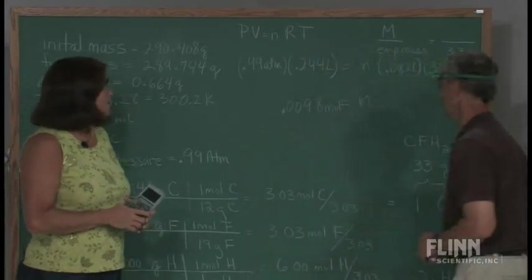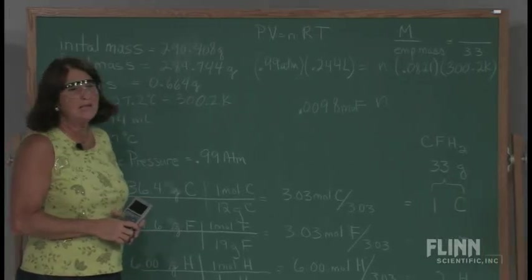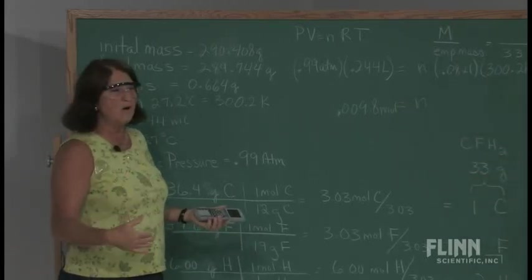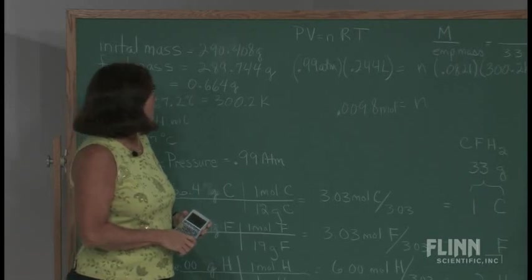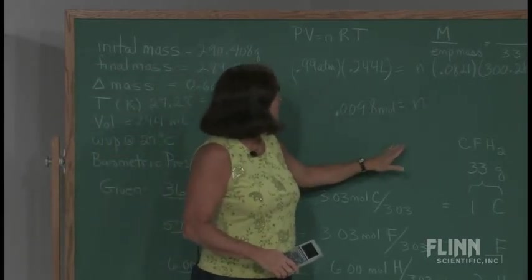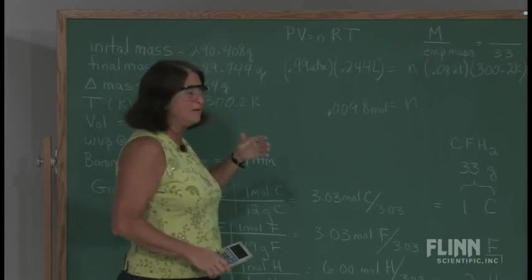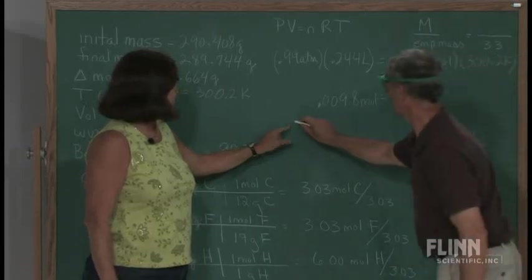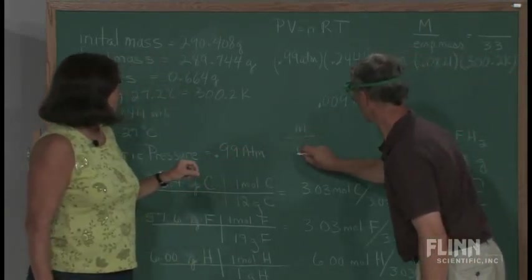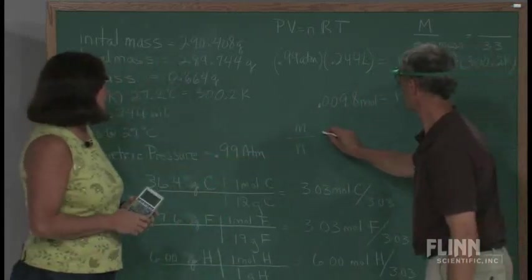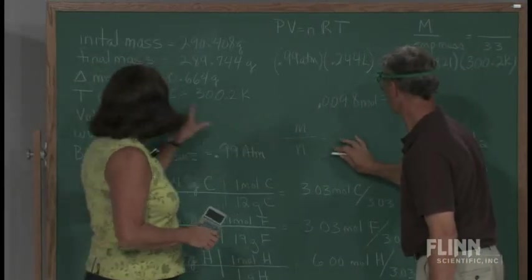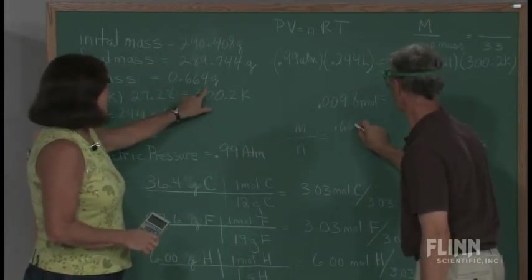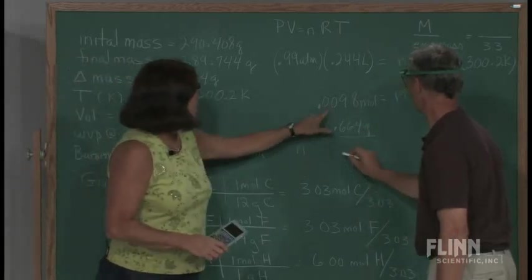So if I have that many moles, what I really want to do is find the molar mass, and I know that moles is going to be mass over the molar mass. So let's take the mass here, divide it by N. Mass is 0.664 grams divided by the number of moles, which is 0.0098.